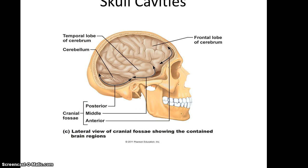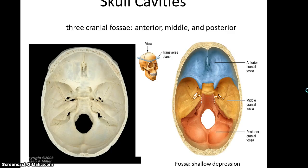Looking into the cranial cavity, you can see what are called cranial fossae — basically three shelves that different parts of the brain rest upon. You have the anterior cranial fossa, where the frontal part of the brain rests. You have the middle cranial fossa, where the temporal lobe of the brain rests. And then you have the posterior cranial fossa, where the cerebellum rests. Here is another picture of those fossae looking down into an open skull: anterior in front, middle, and posterior.